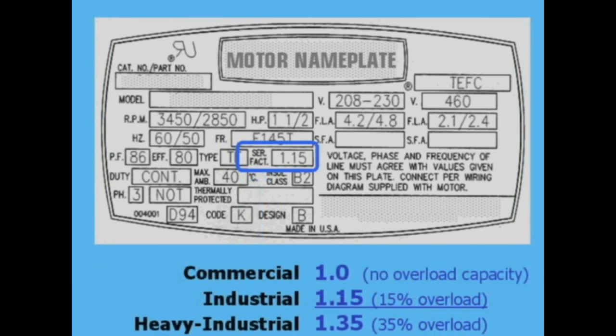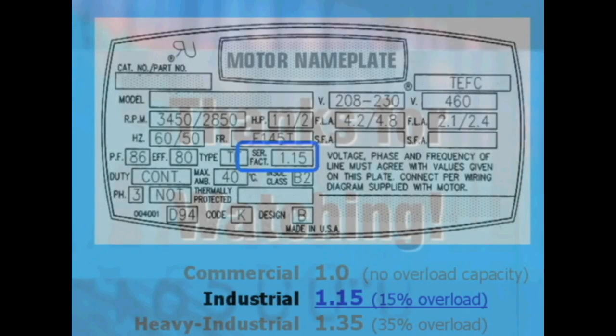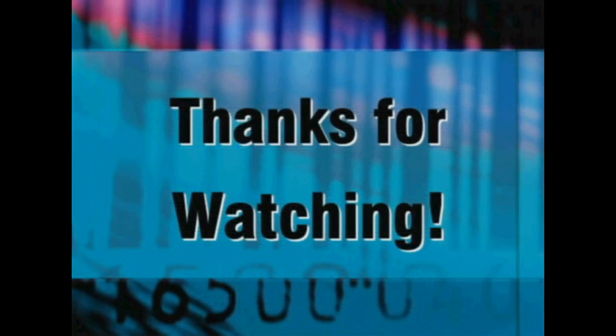Less expensive commercial grade motors are often rated 1.0 with no overload capacity. Industrial motors cost slightly more but are usually rated 1.15, meaning they're able to deliver 15% more than rated horsepower indefinitely.